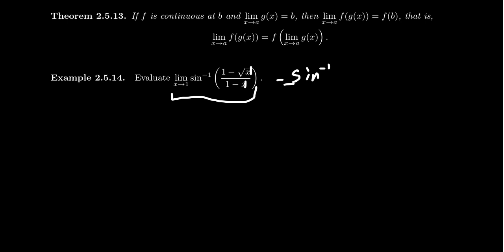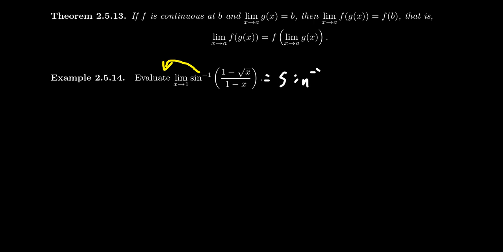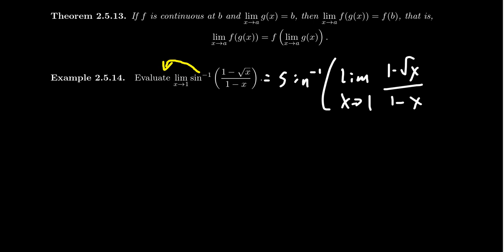The good news is that sine inverse is not what causes any obstruction here. Sine inverse is a continuous function, so we can bring sine inverse out of the limit process — in which case we get sine inverse of the limit as x approaches one of one minus the square root of x over one minus x.